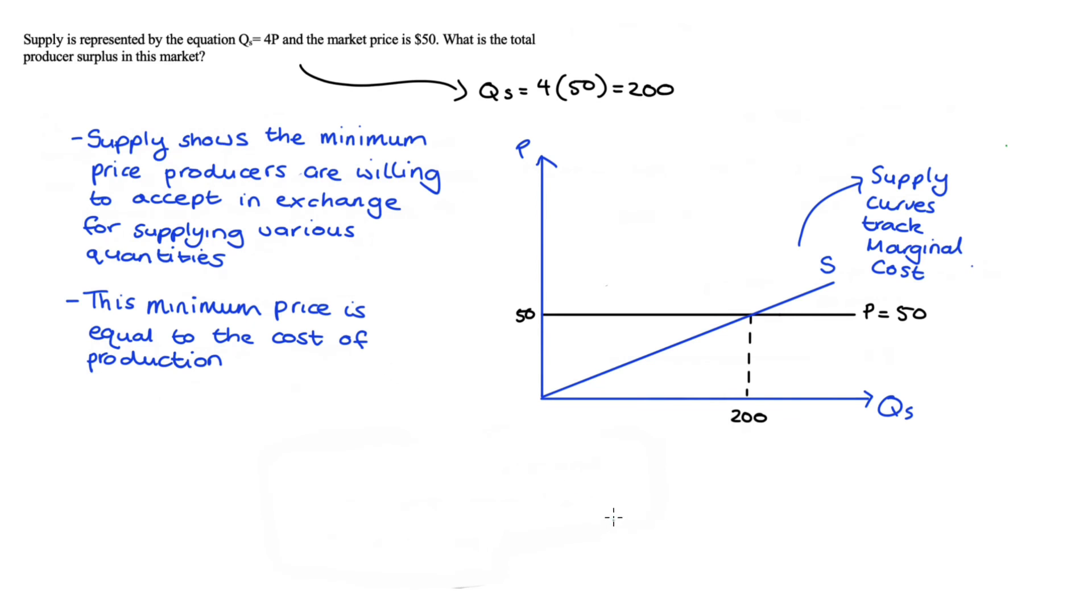Our producer surplus is just the sum of all the differences between our price and marginal cost for each unit produced. If we take the difference for just one of those units, say Q1, just an arbitrary quantity, the difference would be just like this line here between the price and the supply curve, right? That would be the difference between the price and marginal cost.